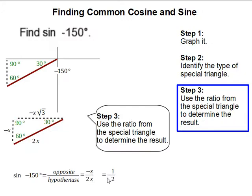The x will cancel out and that will leave you with negative 1 over 2. And this completes our problem.